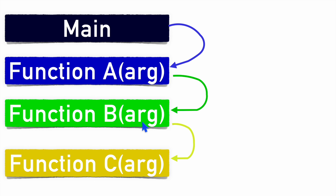To return correctly, you need to track the return address of function B. When function B completes, you return to function A — your parent function. You need to store the return address of function A, and when function A completes, you return to the main function. So the return address inside main must also be stored.